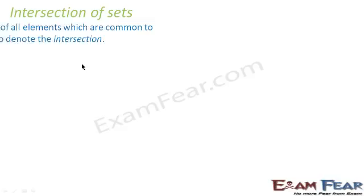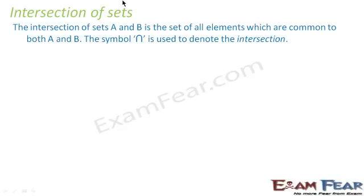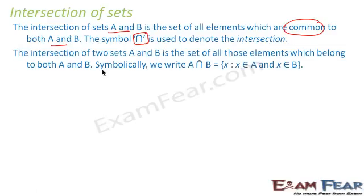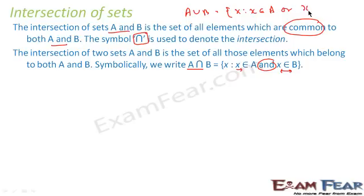Intersection of sets: the intersection of set A and B is the set of all elements which are common to both A and B, denoted by the intersection symbol. When we say A intersection B, it is the set of x where x is a member of A and x is a member of B. In the case of union it was 'or'; in the case of intersection it is 'and'.